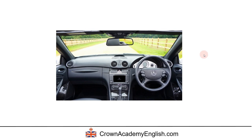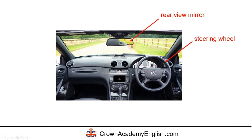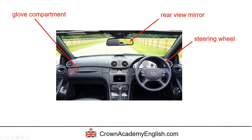So now let's look at the interior, the inside of the car. We have a steering wheel. We also have a verb — we say we steer a car. We can steer to the left and we can steer to the right. This is called the rear view mirror. We use the rear view mirror to look directly behind the car, to see if there is any traffic behind us.